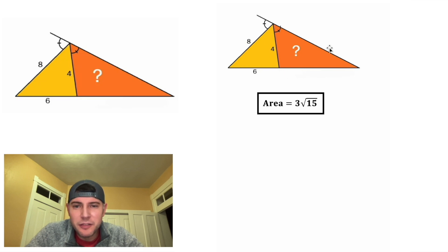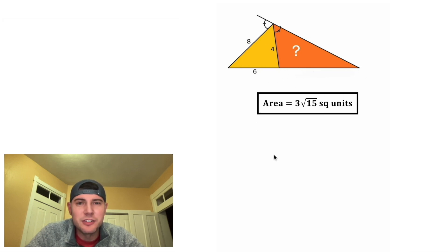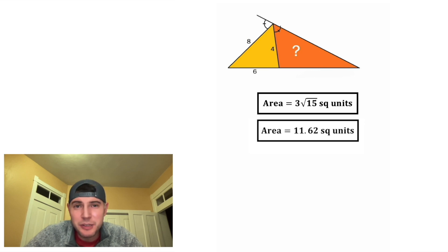So in this problem, the area of this orange triangle is equal to 3 square root of 15 square units. And that is approximately 11.62 square units. How exciting. This is kind of a long one. If you actually finished it, comment a TV series you'd recommend watching. I need some suggestions.